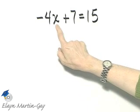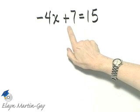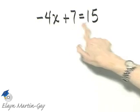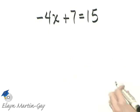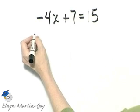This is a variable term, constant, constant. So I will subtract 7 from both sides so that this variable term is by itself on the left side of the equation.